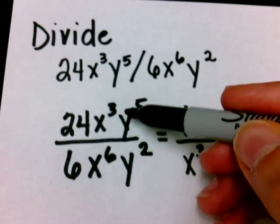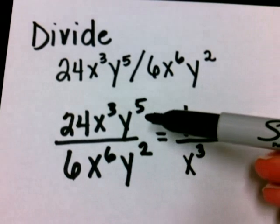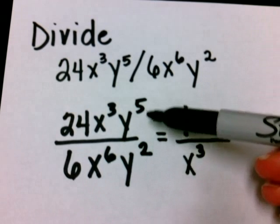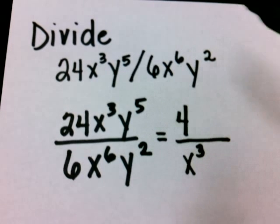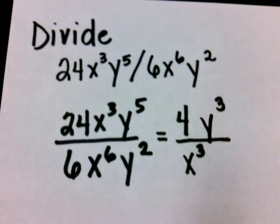And remember how we got the 3. We did 6 minus 3. Let's look at the y's now. y to the fifth divided by y to the second. I know I'm supposed to subtract these exponents. So 5 minus 2 would give me 3. The 5's bigger, so I know the y to the third goes on the top. And this would be my final answer.